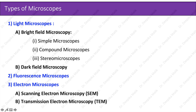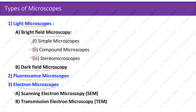The different types of microscopes we'll study are: first, light microscopy, which includes bright field microscopy — further divided into simple microscopes, compound microscopes (upright and inverted), and stereo microscopes. The second type of light microscopy is dark field microscopy. Then we'll discuss fluorescence microscopes and electron microscopes, which are categorized as scanning electron microscopes and transmission electron microscopes. Now let's discuss all these microscopes one by one in detail.